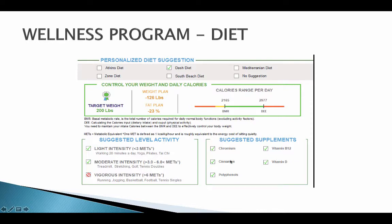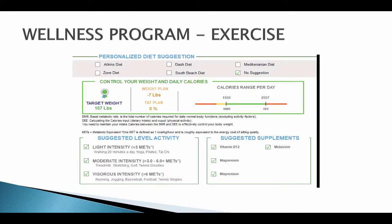Based on test results, the machine also recommends certain nutritional supplements. This second person is in a bit better shape — vigorous activity is recommended, with a double dose of magnesium, possibly related to a sleep marker. No specific diet is suggested other than elimination of processed foods and increased vegetables and fruits.